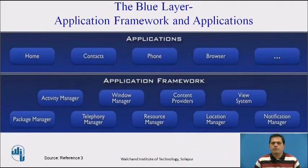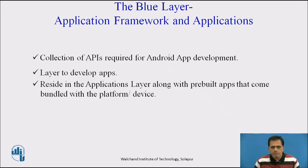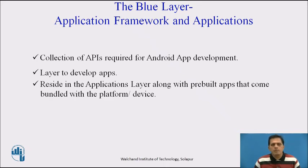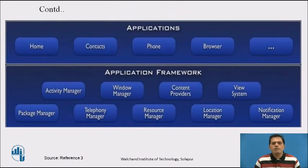The blue layer contains the application framework and applications. Applications include home, contacts, and phone. The application framework contains Activity Manager, Package Manager, and Telephony Manager. Every application framework is used by developers to develop Android apps. The application framework provides a collection of APIs required for Android application development, enabling developers to build apps that reside in the application layer along with pre-built apps that come bundled with the platform or device.